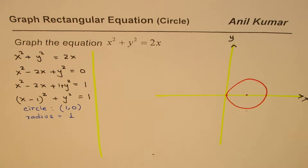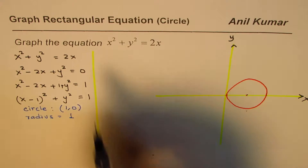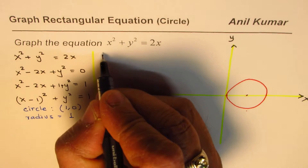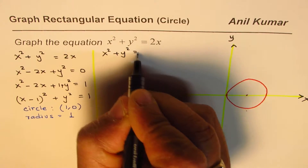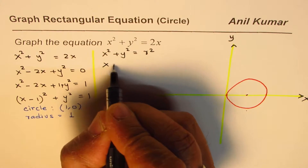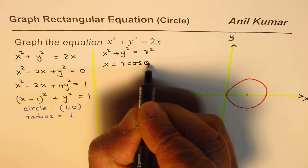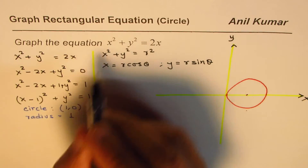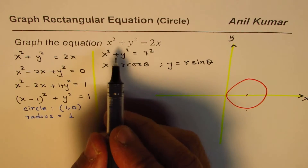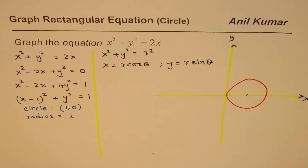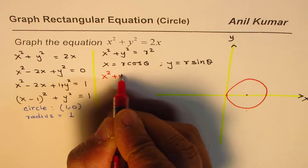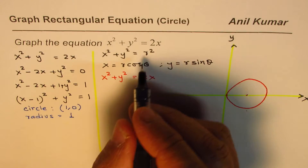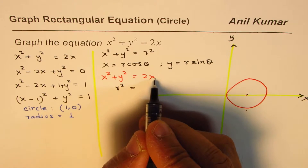Now there is another way of doing the same thing, which is to convert this to polar form. We know that x squared plus y squared equals r squared, and we also know x equals r cosθ and y equals r sinθ. So the equation x squared plus y squared equals 2x — we convert this to polar form: x squared plus y squared is r squared, so we write r squared equals 2 times x.